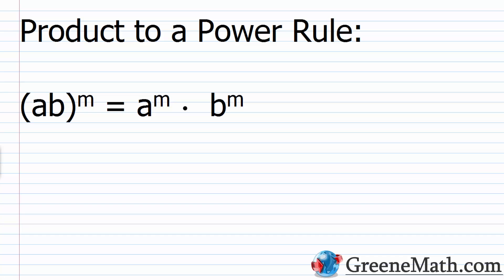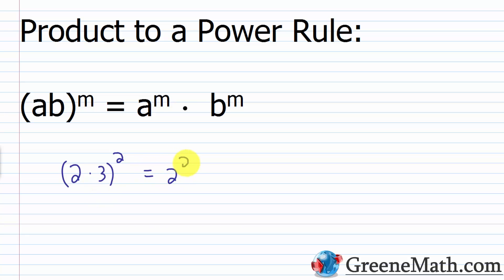The next rule is the product-to-a-power rule. If I have a product a times b raised to a power, I can raise each factor to that power individually: (ab)^m equals a^m times b^m. For example, two times three raised to the second power equals two squared times three squared. We can verify: two times three is six, and six squared is 36. Meanwhile, two squared is four and three squared is nine, and four times nine is also 36. You need to know all these rules so you can manipulate expressions and get the answer you need.